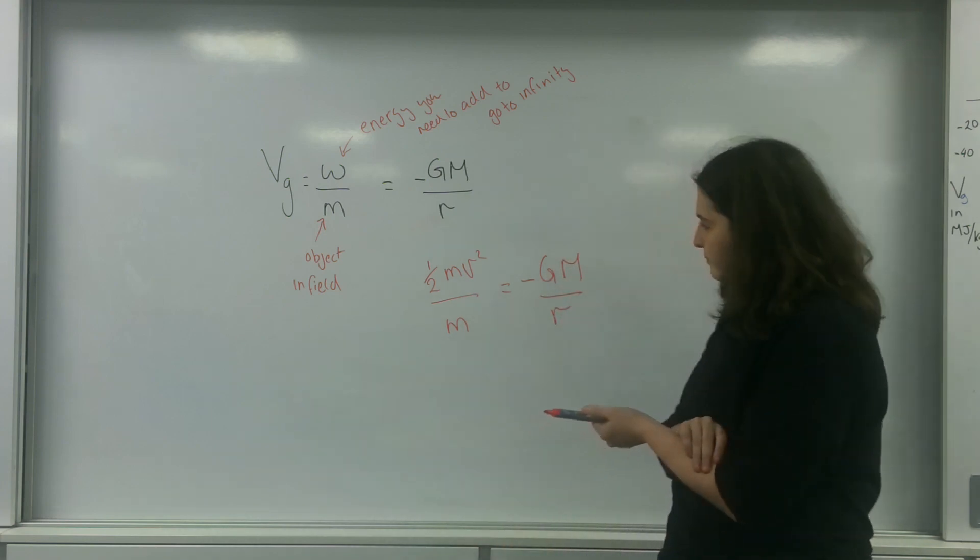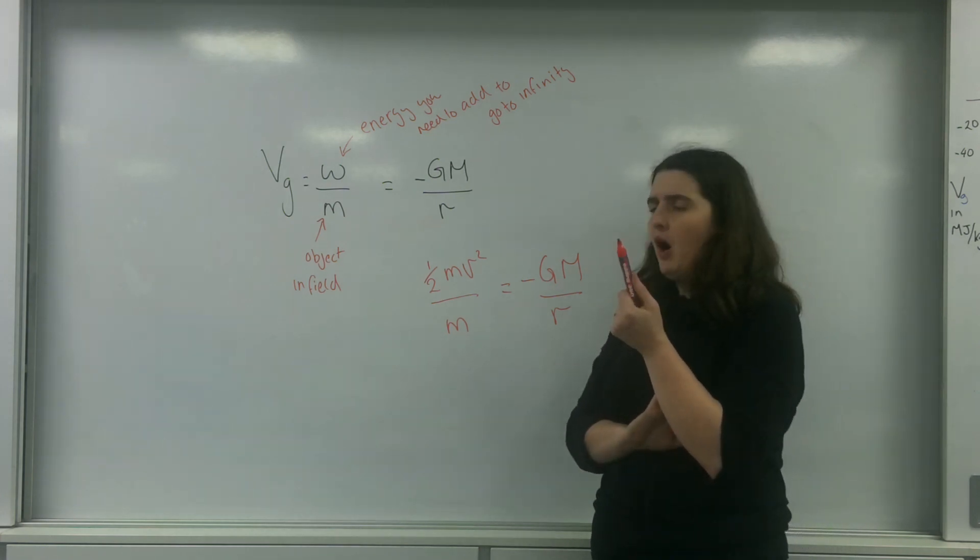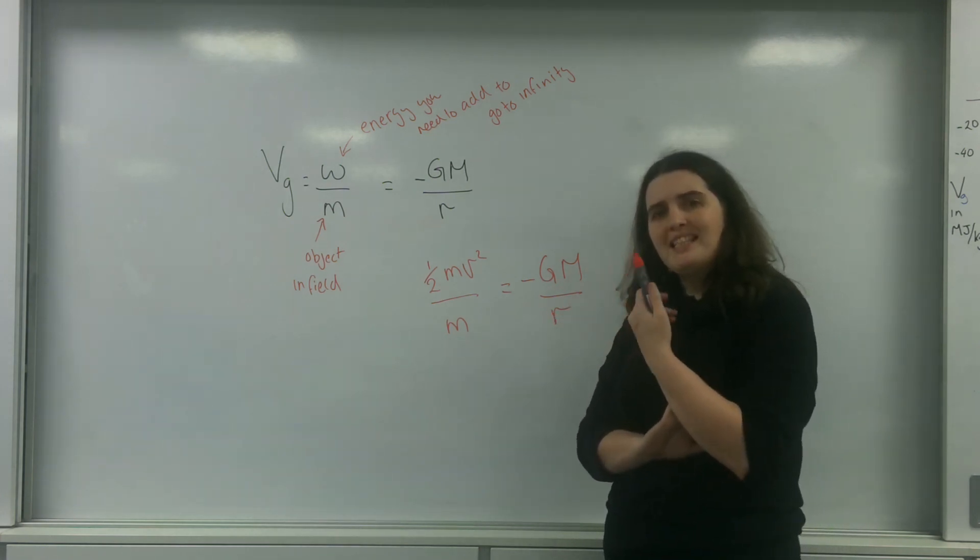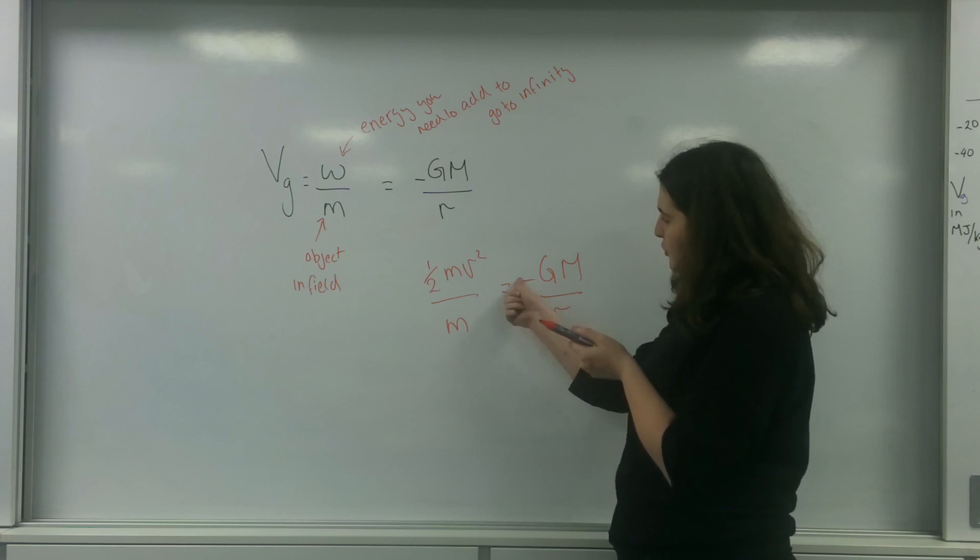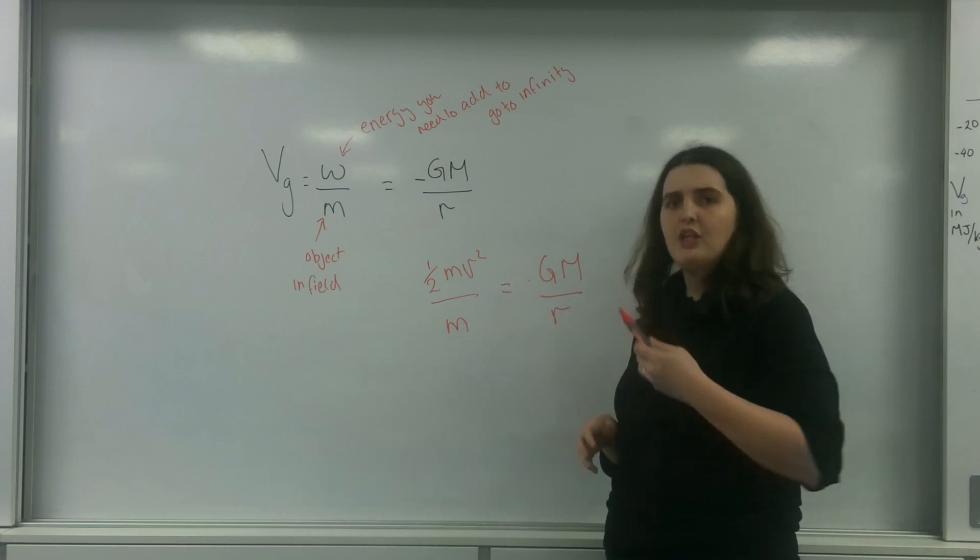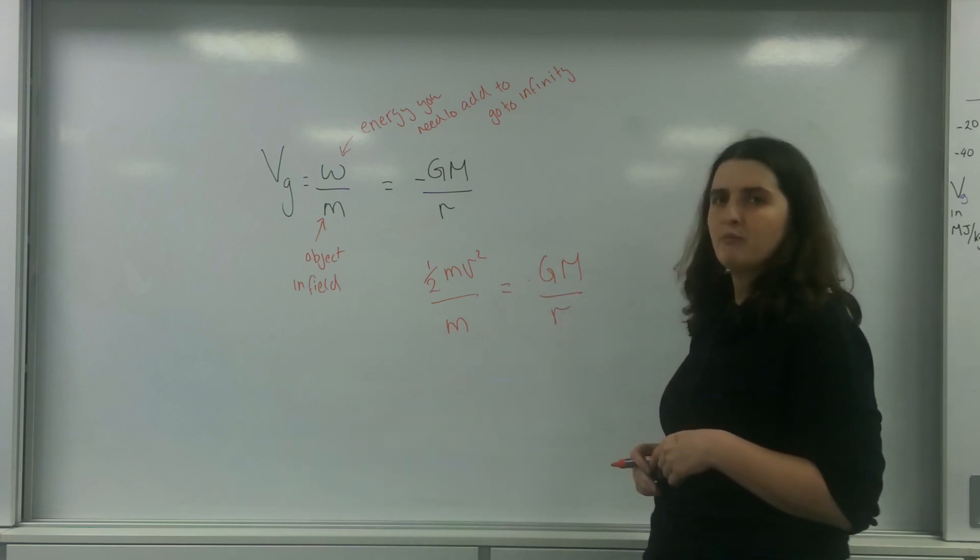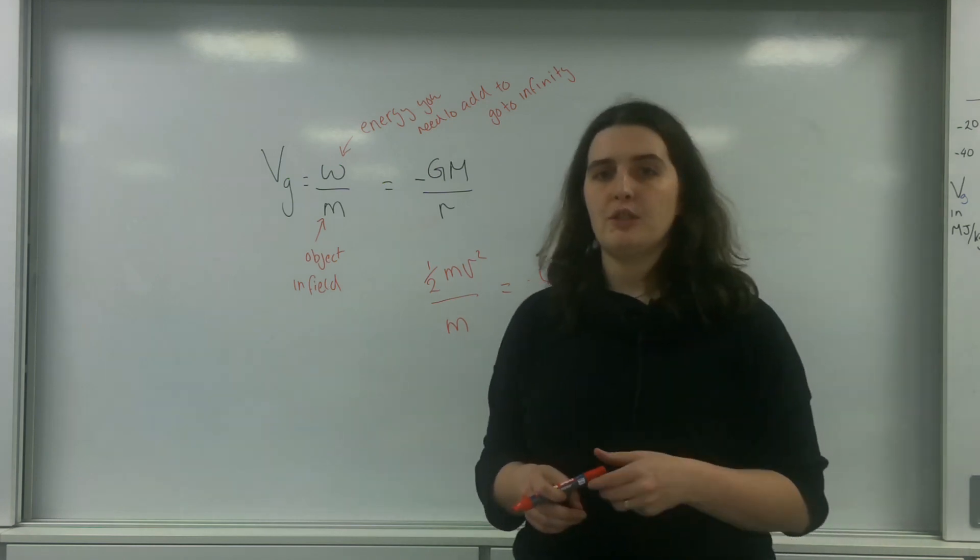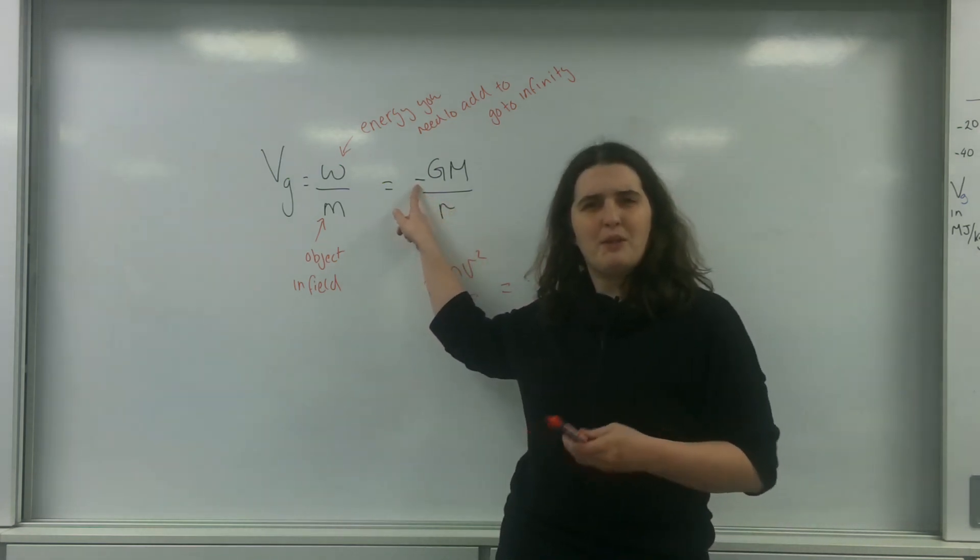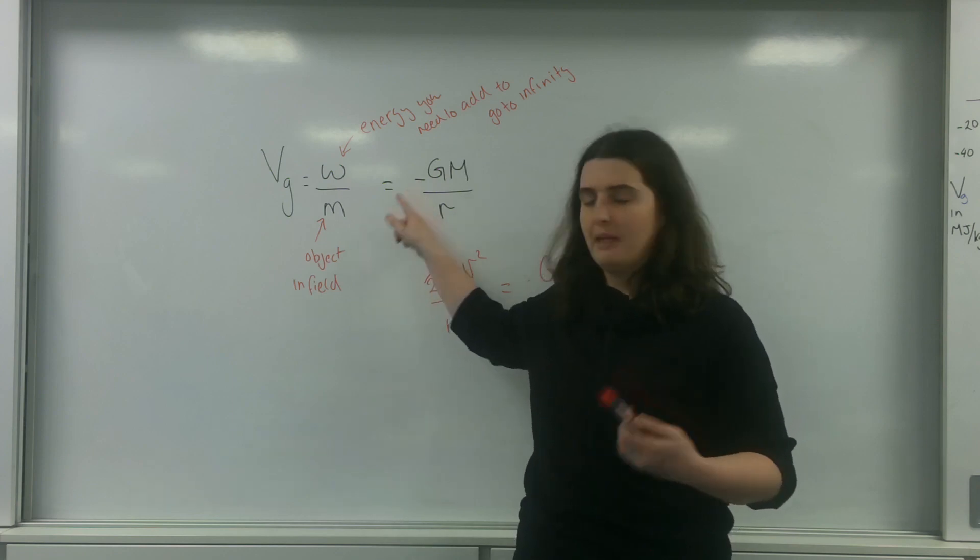Now, I already know that I'm going to add it, so I'm actually going to remove this negative sign here. I already know I'm going to be adding this energy, I'm just trying to work out the magnitude. This sign just tells me, do I need to add it or does the field give it to me? So what happens is these m's cancel.